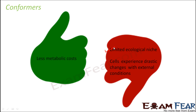Conformers can only stay in a particular region with a climate suitable for their survival. A second disadvantage is that in conformers, cells experience drastic changes with external conditions, which can sometimes destroy the cells. Because they have nothing to control their internal environment, if there are abrupt changes in external conditions, those changes will cause similar changes within the body of that organism and can destroy its cells. These are some of the limitations of conformers.